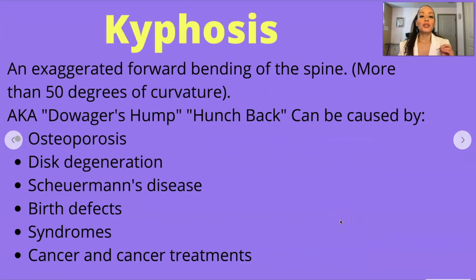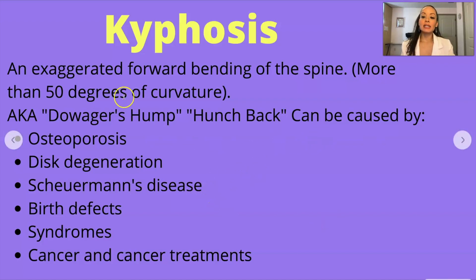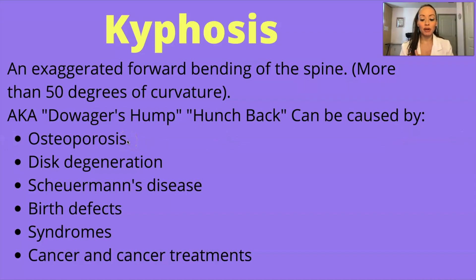Kyphosis is an exaggerated forward bending of the spine — that slouching forward look. It looks very similar to what people call hunchback. It's also known as a dowager's hump or hunchback. It can be caused by a variety of reasons, including broken or crushed vertebrae — compression fractures — which can result in curvatures of the spine.